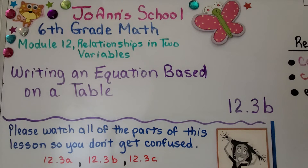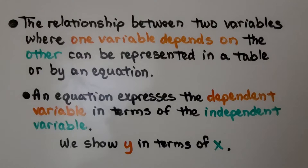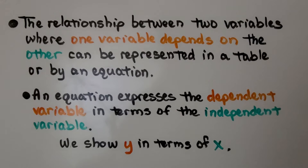Lesson 2.3b: Writing an Equation Based on a Table. The relationship between two variables, where one variable depends on the other, can be represented in a table or by an equation. An equation expresses the dependent variable in terms of the independent variable. We show y in terms of x.